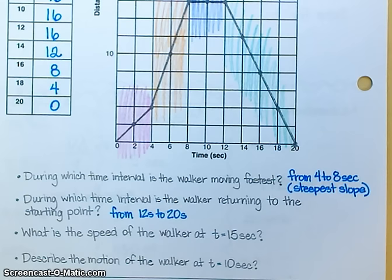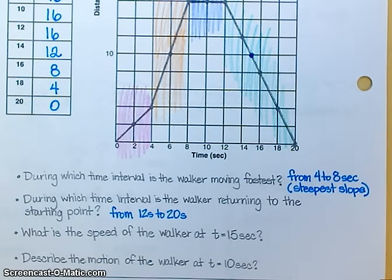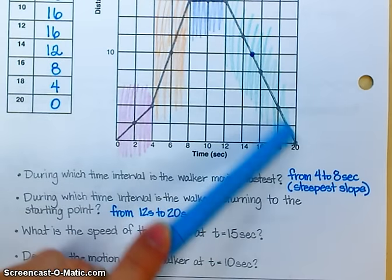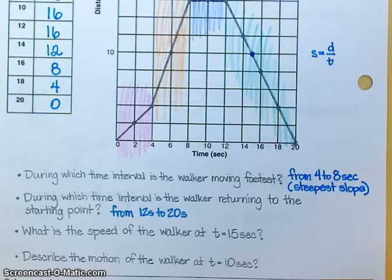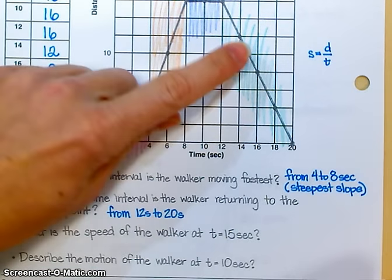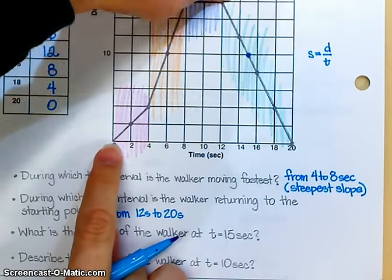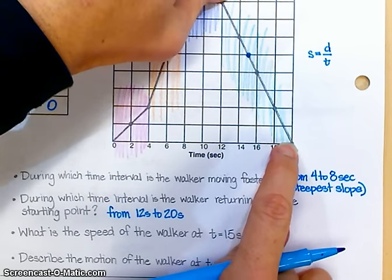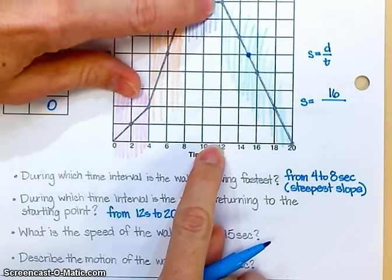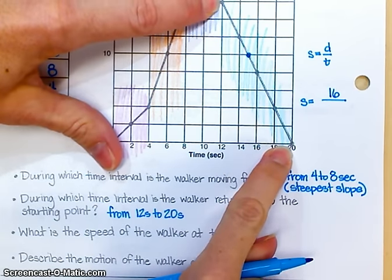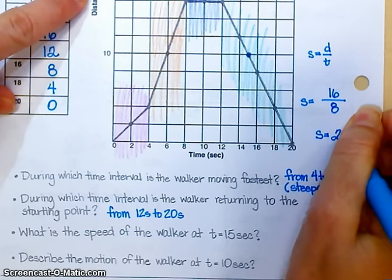What is the speed of the walker at t equals 15 seconds? Well, 15 seconds is going to put you right here. And what I want you to do is, you're going to calculate the average speed for this whole section of the graph. Do y'all remember that speed is distance divided by time? So, how much does the distance change in this part of the graph? Start at 16, end at 0. That's a change of 16. Start at 12 seconds, end at 20 seconds. That's a change of 8. What is 16 divided by 8?